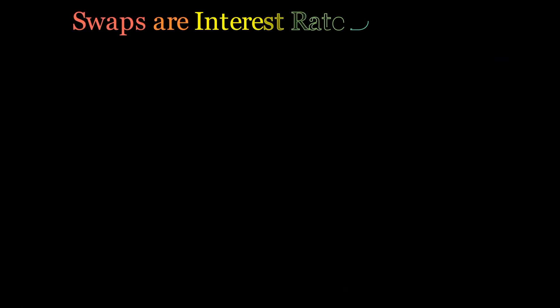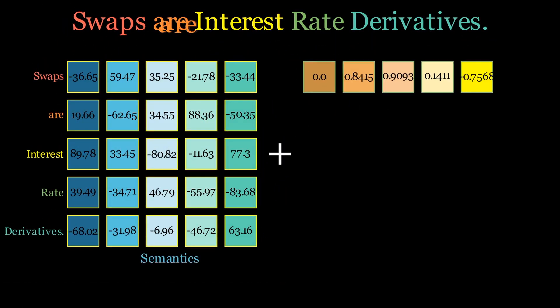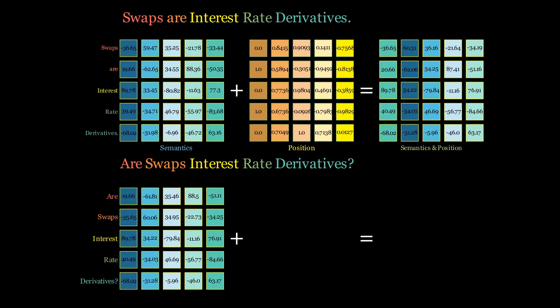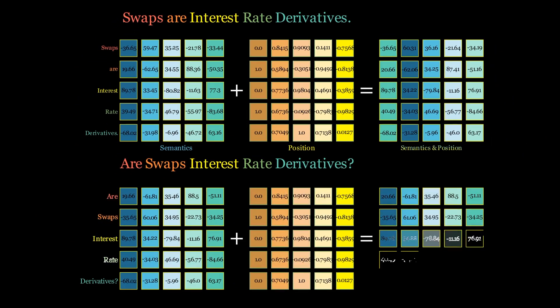By incorporating Positional Embeddings into transformers, you can deal with very long sequences and process input words in parallel. This makes the models both better and faster to train.